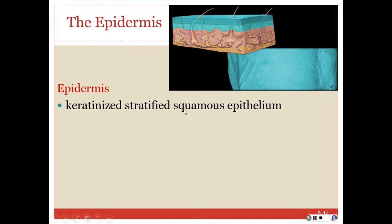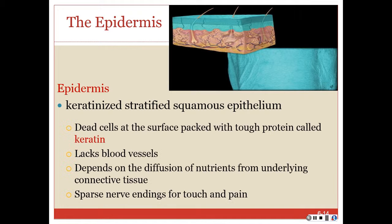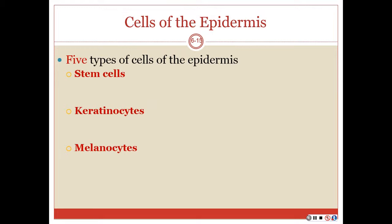Let's look at the first layer of skin — the epidermis. The epidermis is a keratinized stratified squamous epithelium. Like other epithelia, it lacks blood vessels and depends on diffusion for nutrients and waste removal. The epidermis is composed of five types of cells: stem cells, melanocytes, keratinocytes, tactile cells, and dendritic cells.